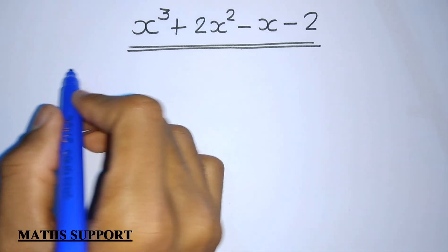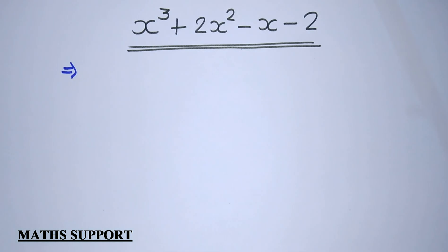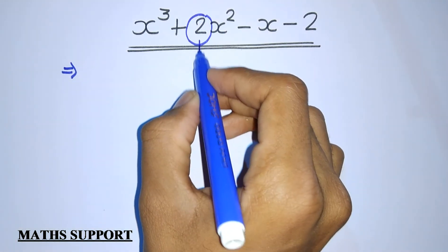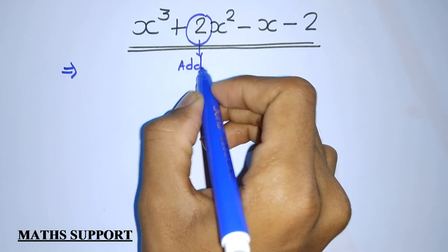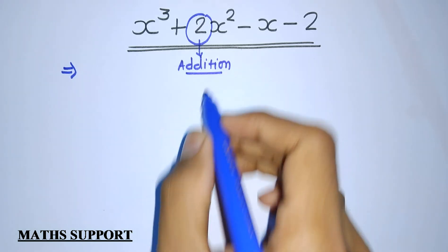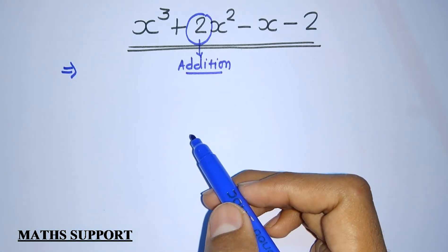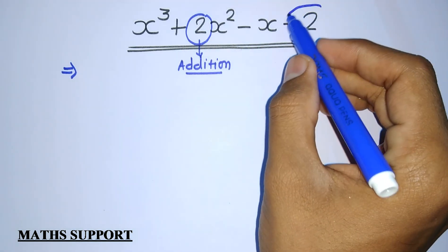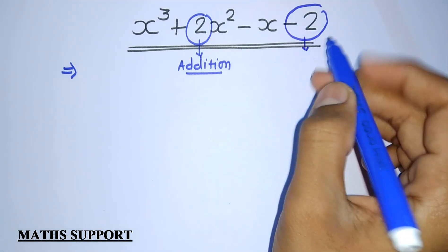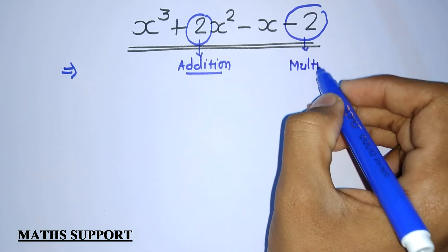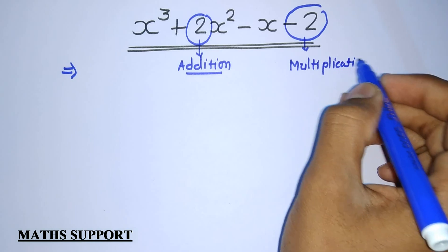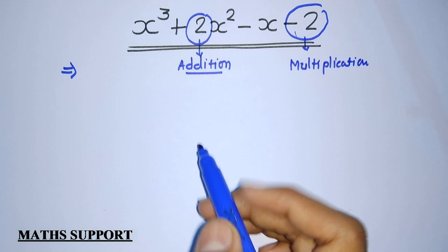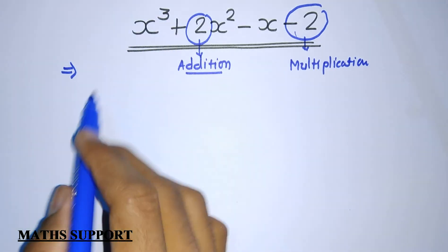First of all, remember that the coefficient of x squared is the addition of all the zeros. Suppose your zeros are alpha, beta, and gamma — then 2 is the addition of alpha, beta, and gamma. And the constant term is the multiplication of all the zeros, so minus 2 equals alpha times beta times gamma.